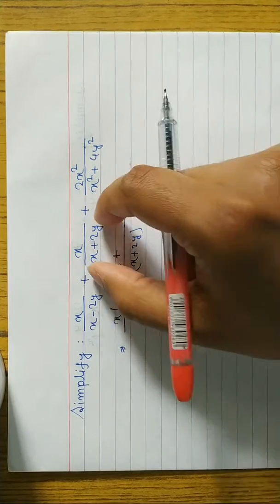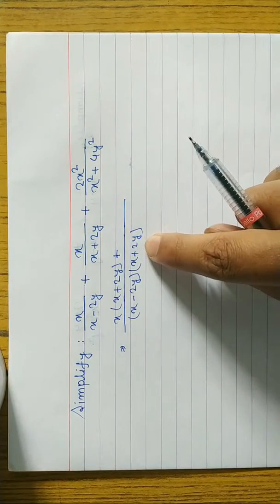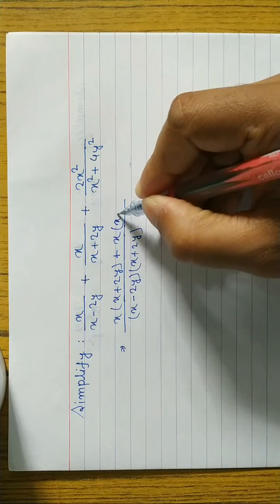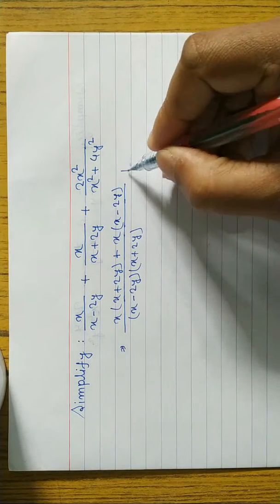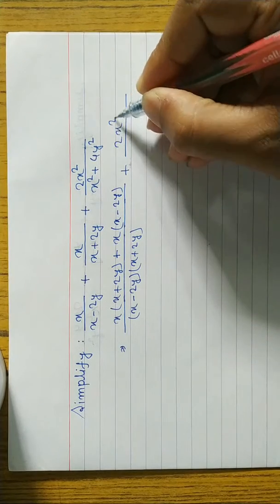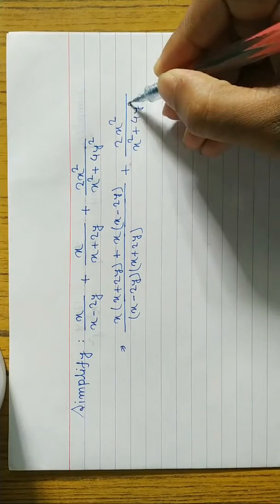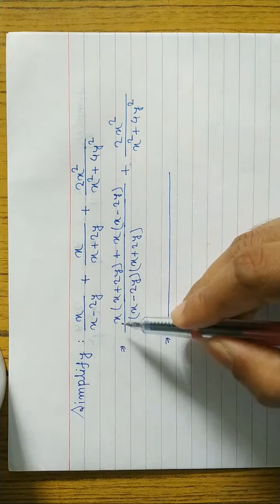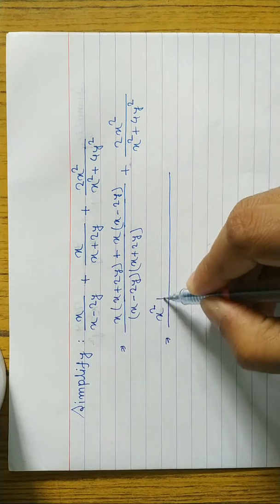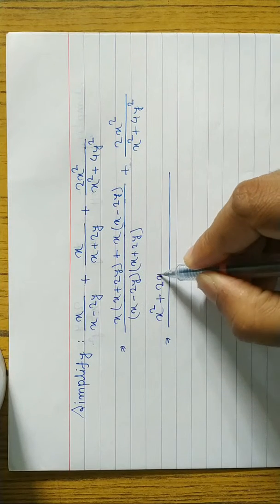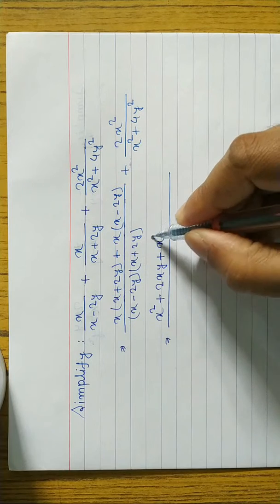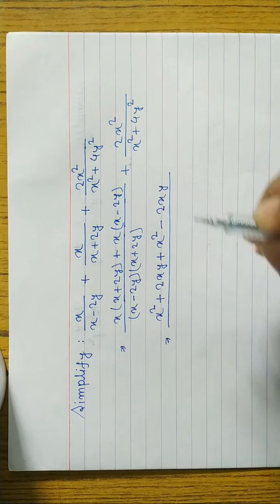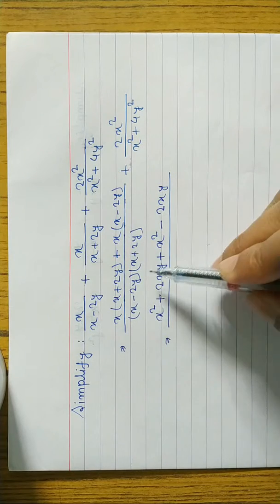Similarly, we divide again: x plus 2y cancels, leaving x minus 2y multiplied by x, so we write x(x minus 2y). The last term, 2x square by x square plus 4y square, is written as-is. Now we open the bracket: x times x gives x square, x times 2y gives 2xy; then x times x gives x square, and minus x times 2y gives minus 2xy.